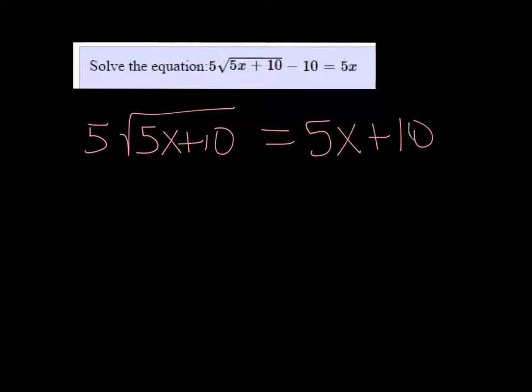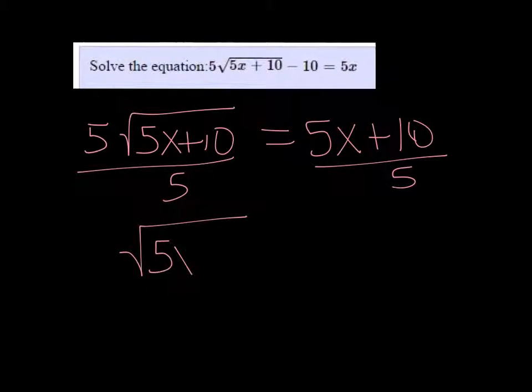And then I'm going to divide both sides by 5, and that way we just get the radical by itself, and x plus 2 on the right side.